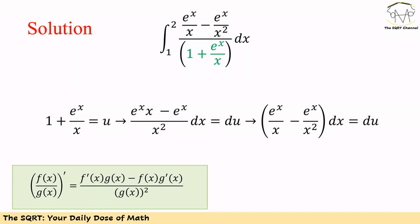Now let's replace (1 plus e^x over x) with a new variable u. If we take the derivative of both sides, we get 0 for the constant 1, and then e^x times x minus e^x over x squared for the derivative of (e^x over x). We will have dx on the left-hand side and du on the right-hand side.